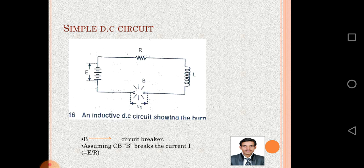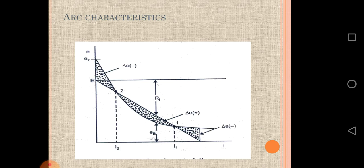An inductive DC circuit is shown here. Capital B shows the circuit breaker connected in the circuit and EV is the voltage. When B breaks the current I, it means I equals E upon R. This is the arc characteristics — the graph between current I and voltage E.